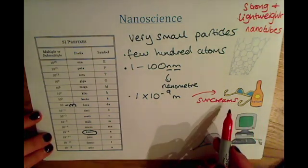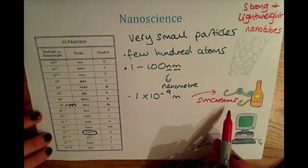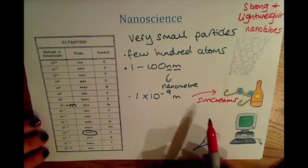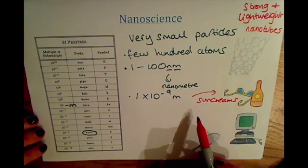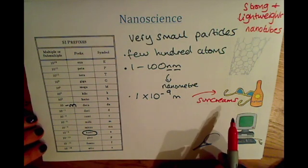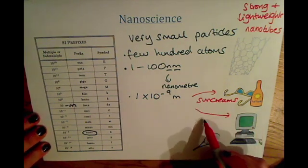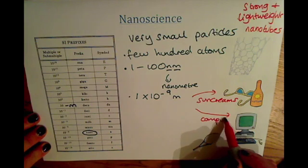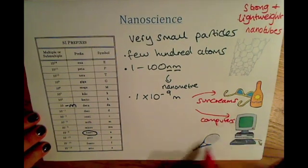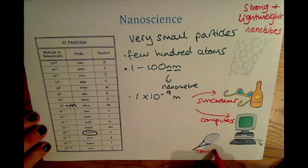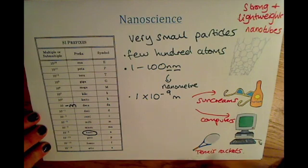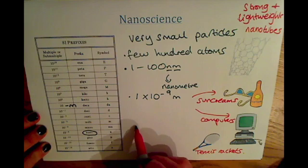Similarly, nanoparticles can be used in things like sun creams. Having nanoparticles in the sun cream means you are protected from UV light, but the nanoparticle technology means the sun cream can be applied as a clear sun cream rather than a white sun cream. They are also being used in the development of new computers, and they can also be useful catalysts.